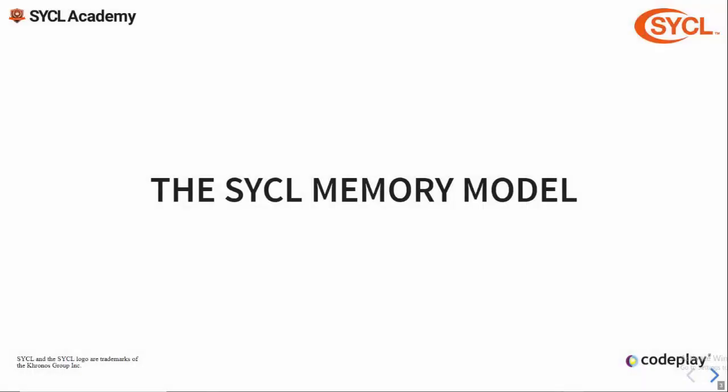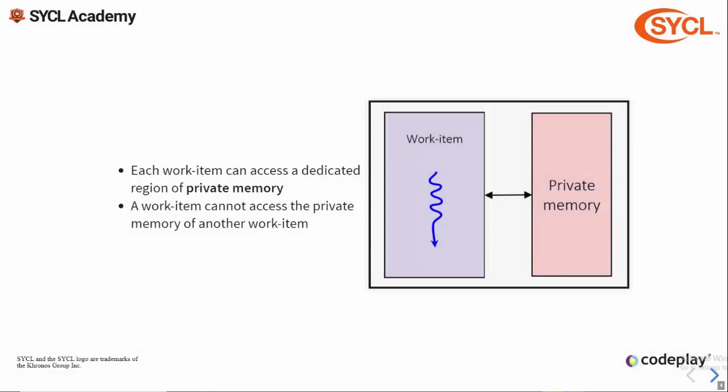First up we're going to cover the SYCL memory model. In the last lecture we looked at the SYCL execution model and the composition of work items and work groups. Here we're going to see how this relates to the hierarchy of different memory spaces available in SYCL devices. The fundamental component of execution was the work item, a single thread of execution. Each work item can access a dedicated region of memory called private memory, and no work item can access the private memory of any other work item.